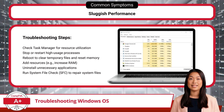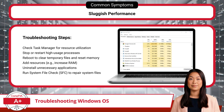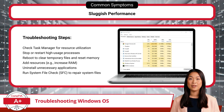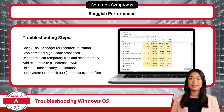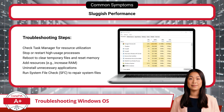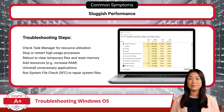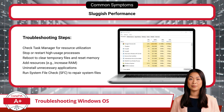If the system is experiencing sluggish performance, it may be due to high CPU usage, limited RAM, or software issues. Start by rebooting the system to clear temporary files and reset memory usage. Next, open Task Manager to view resource utilization, identify any processes consuming excessive resources, and stop or restart those processes as needed. If performance remains slow, consider adding resources, such as increasing the system's RAM, to better handle demanding tasks. Additionally, uninstall unnecessary applications that may be consuming resources in the background. Running a system file check can also identify and repair corrupted system files that may be contributing to performance issues.